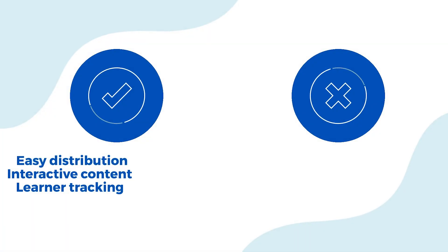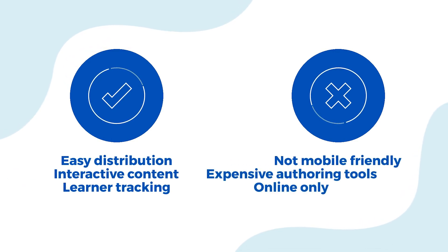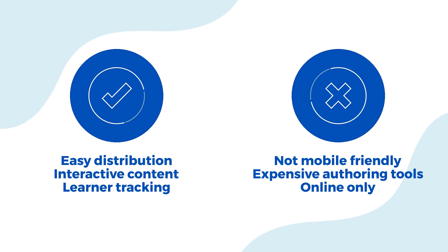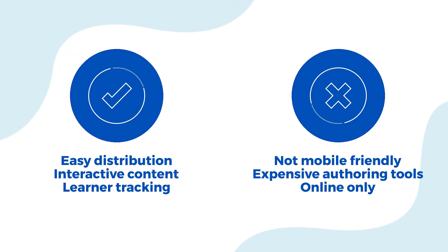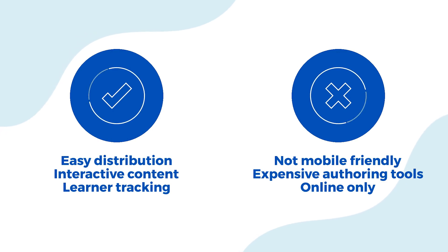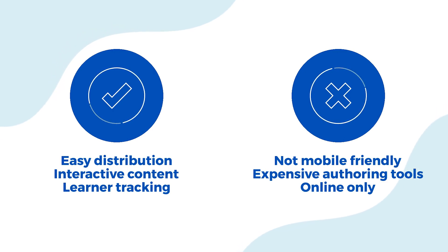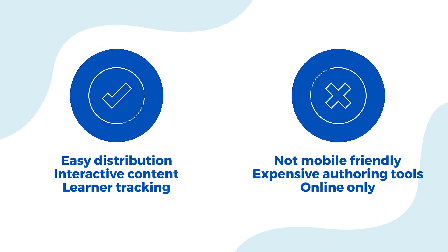SCORM: a standard designed to replace AICC, eliminate its flaws, and make remote learning more cost-effective. The last version of SCORM — Shareable Content Object Reference Model — was released in 2009, and no further additions are planned. Despite the passage of years and many different releases, SCORM 1.2 is the most popular e-learning standard worldwide to this day.